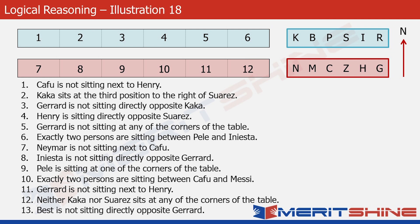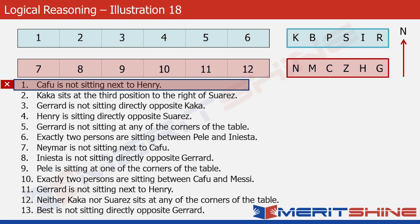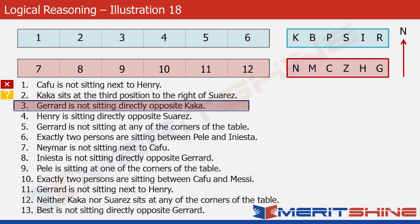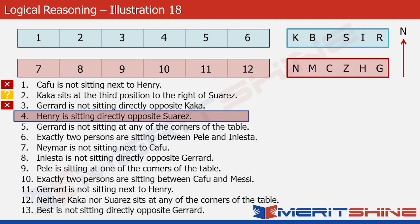Now I'd like to bring back the 13 statements to show you how we select which ones to start with. Statement 1: Kafu is not sitting next to Henry — that's a negative statement, cannot be put in the structure at this stage. Statement 2: Kaka sits at the third position to the right of Suarez — this looks good to start with. Statement 3: Gerard is not sitting directly opposite Kaka — again a negative statement, cannot be used. Statement 4: Henry is sitting directly opposite Suarez — not negative, but there are 6 possibilities, so not useful at this stage.